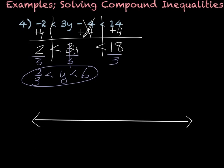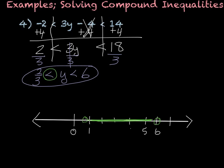Now I'm going to graph that. Put 0, then 1, 2, 3, 4, 5, 6. When I'm finding 2 thirds, it's somewhere around there, and it's an open circle because it's a less than sign. And then 6 gets an open circle because again it's a less than sign, with shading in between. There's your graph.